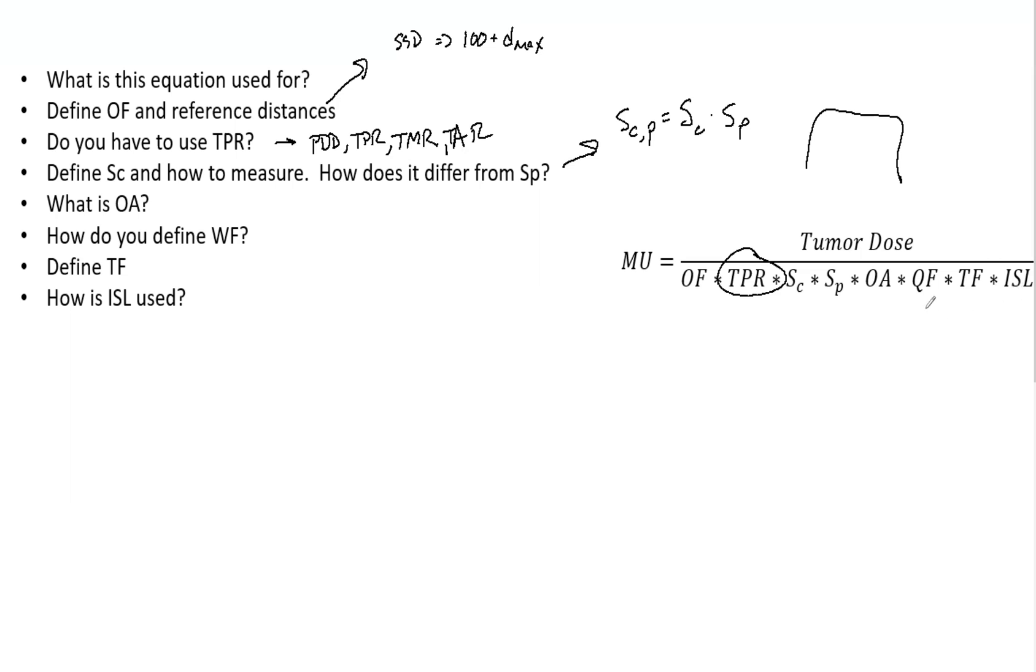Finally, inverse square law. If a point isn't at the reference distance, then we have to account for this. For example, percent depth dose. And this matters if you're using TPR, if you're using PDD. This is a factor that does change based on the actual output.